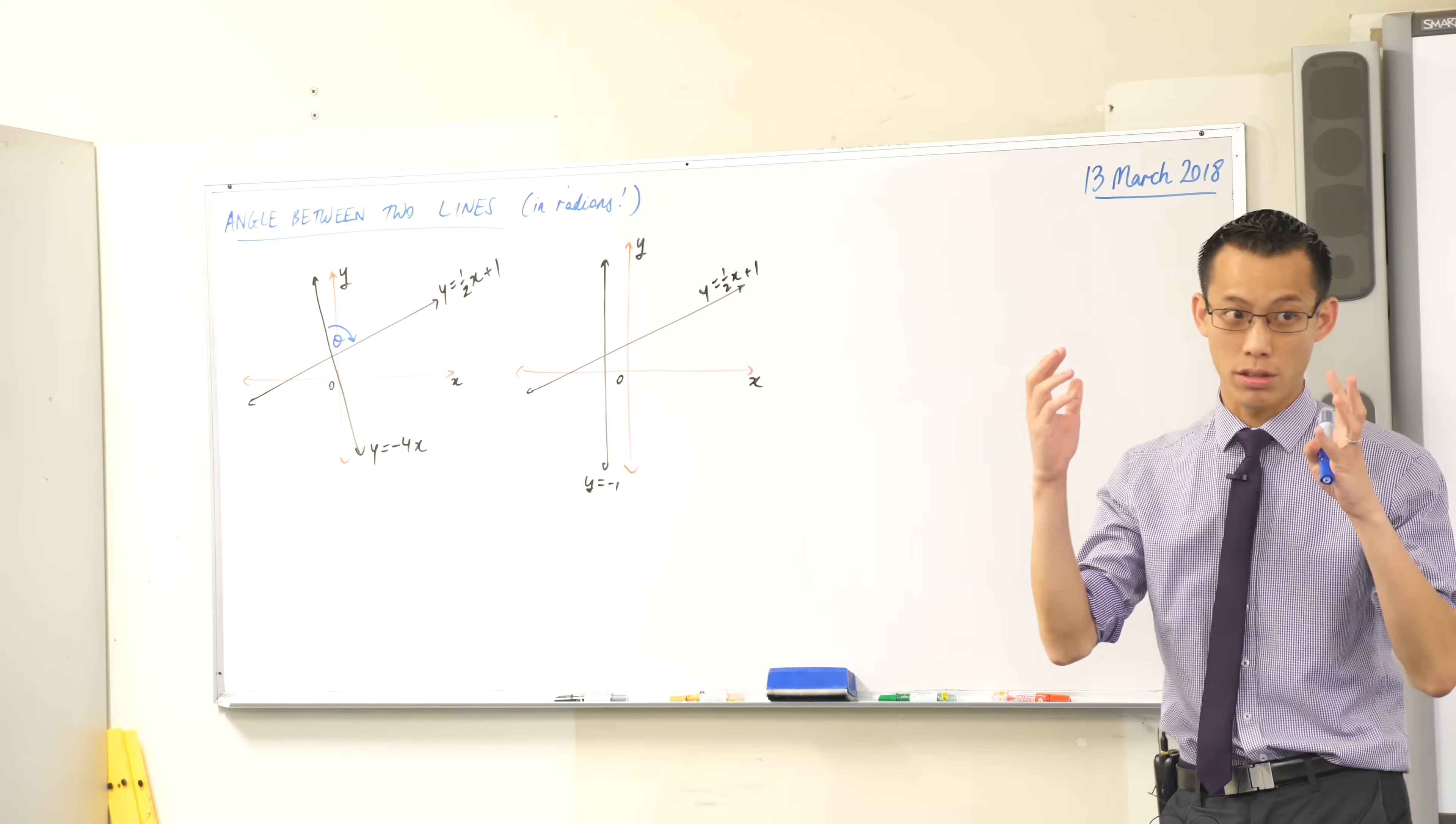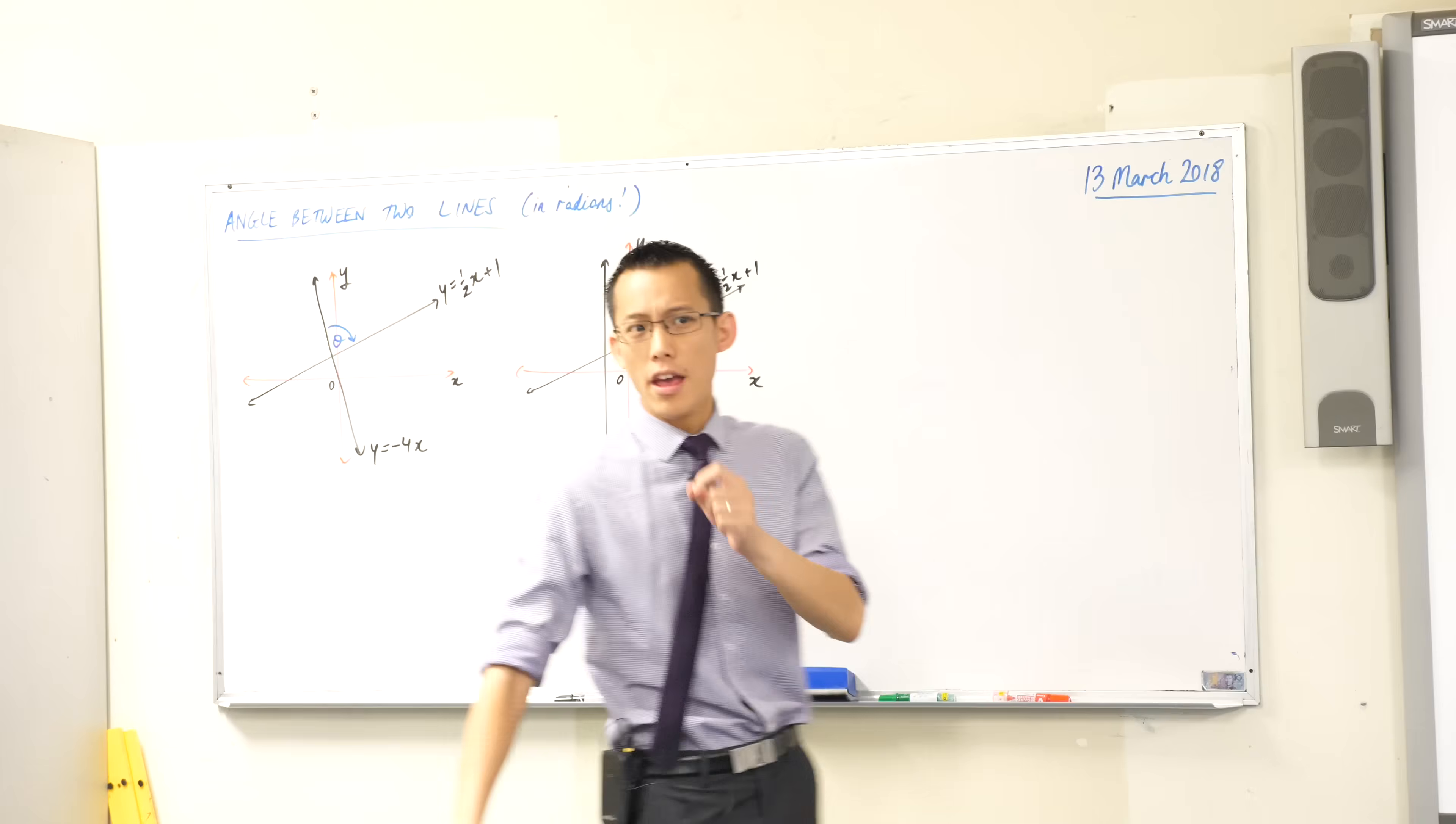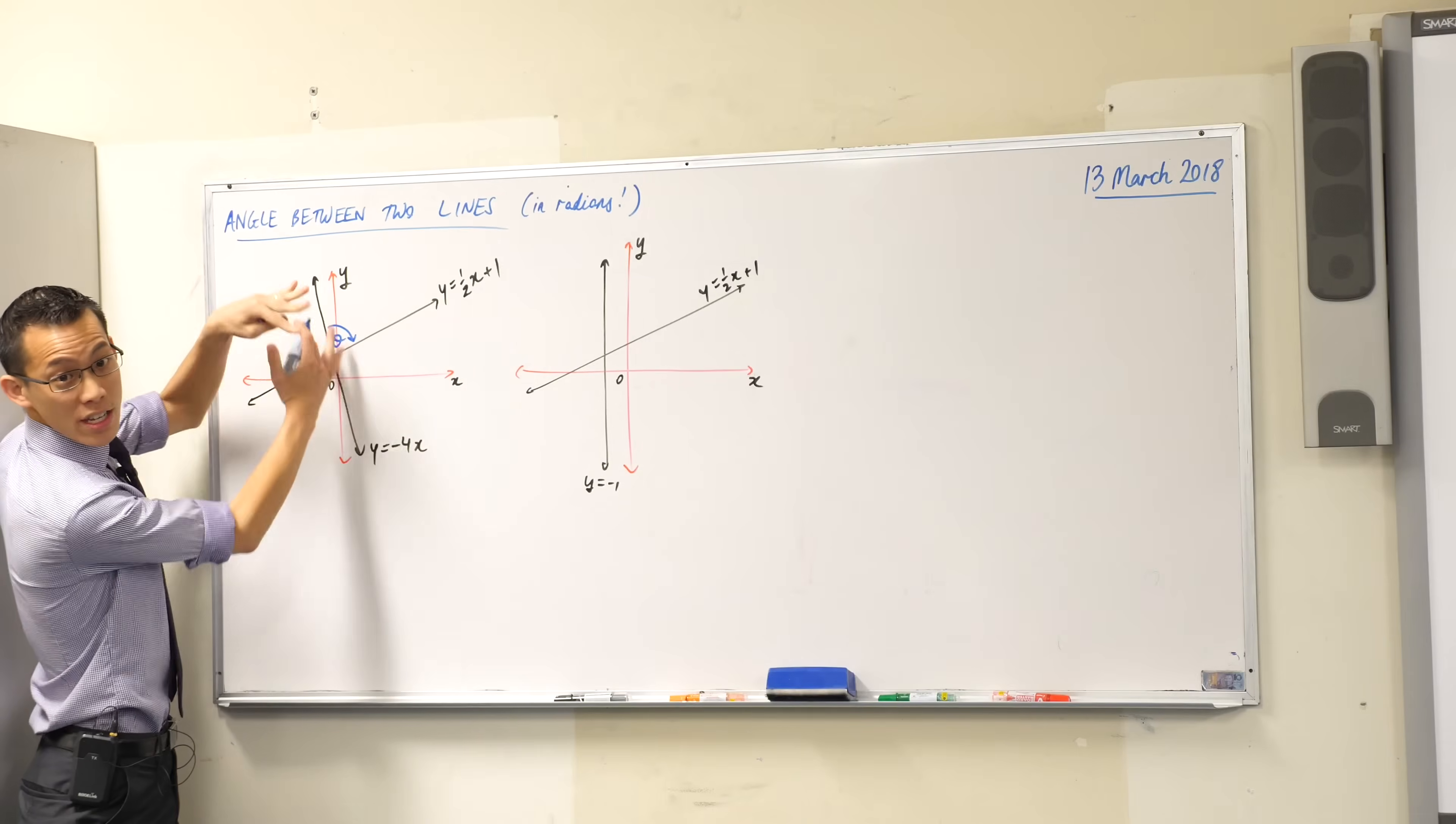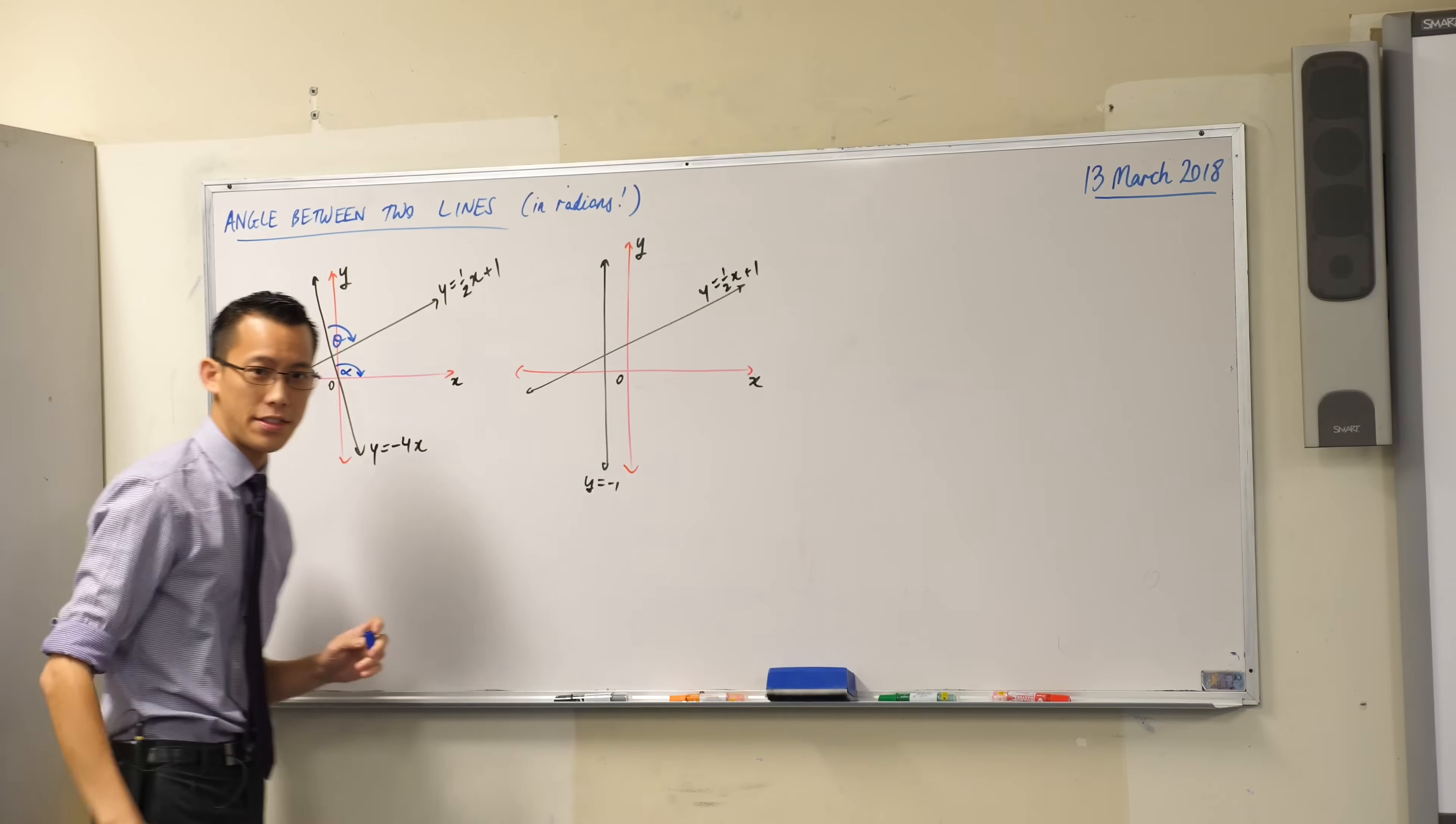But the relationship between them is they're just supplementary. So whichever one you find, you just look at the question and the wording of what it says and you're going to use the same formula one way or the other. Now if we want to find the angle between the two lines, if you remember back to when we first proved this, it's based on the angle between each of those lines and the x-axis.